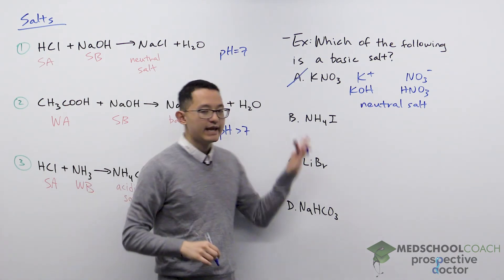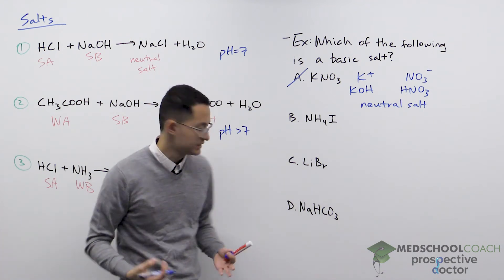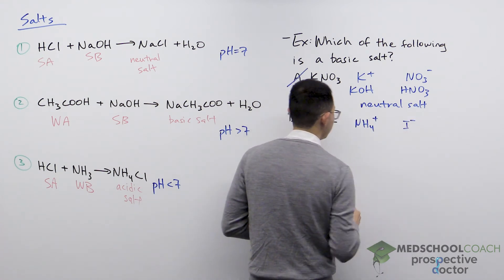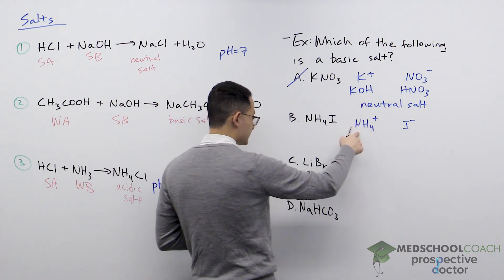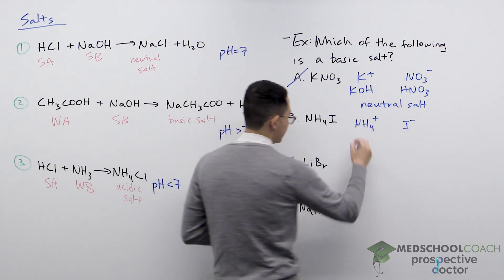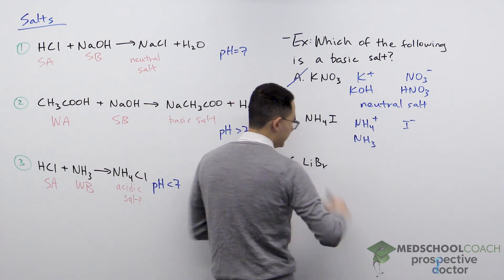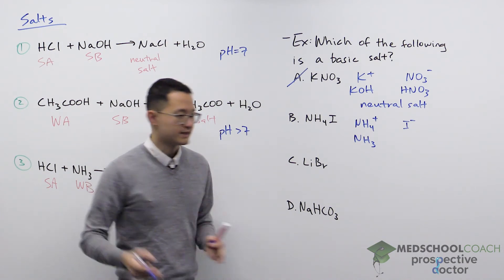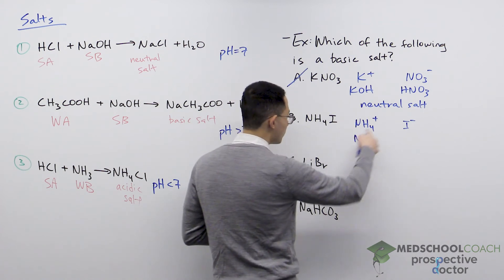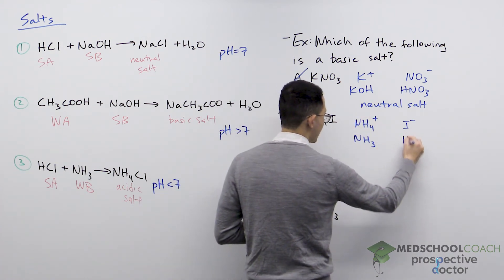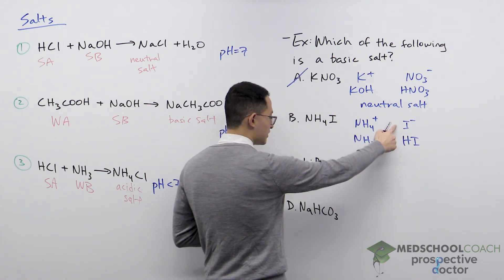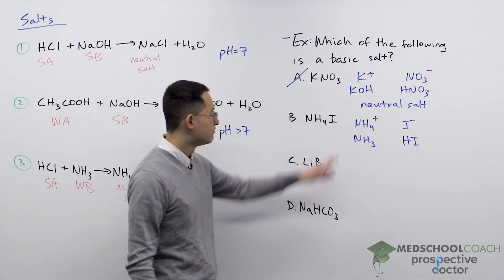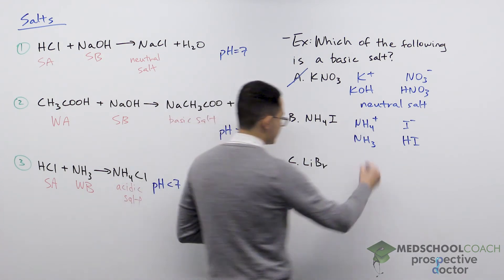Option B is NH4I, which is NH4+ and I−. NH4+ has a positive charge, so it's a conjugate acid — it came from NH3, ammonia, which is a weak base. Since the conjugate of a weak is a weak, ammonium is a weak acid. I− came from HI, which is a strong acid, so its conjugate base I− has no basic properties. Our salt has no basic properties but is weakly acidic, so this is an acidic salt — not the answer.